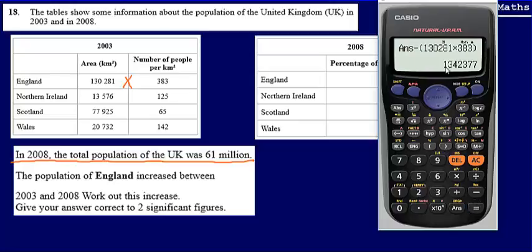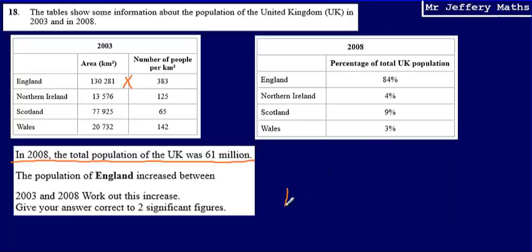That gives me an answer of 1,342,377. I'm asked to give the answer correct to two significant figures, so correct to two significant figures that's just going to be 1,300,000. So my answer is 1,300,000.